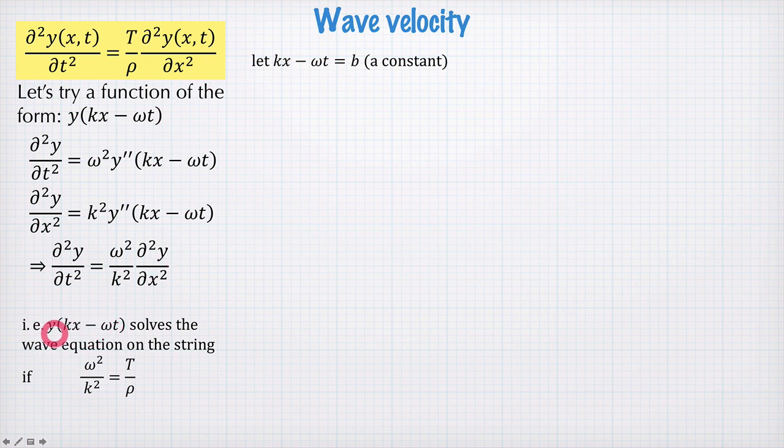Let's have a think now about this function y(kx - ωt). In order to see how fast a wave is going, what we need to do is set kx minus ωt to be some constant. Now, if the argument of this function y is a constant, then the height of the wave is constant and we're sort of following along a peak of the wave, if you like.